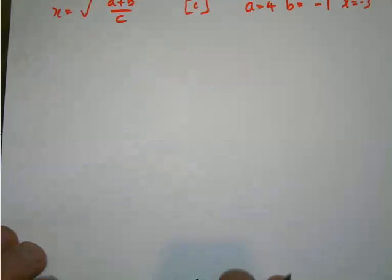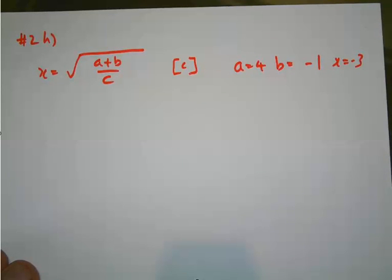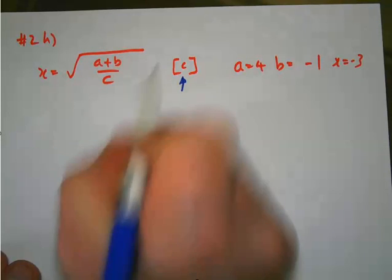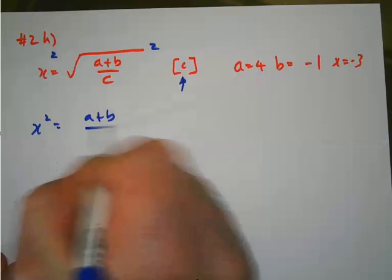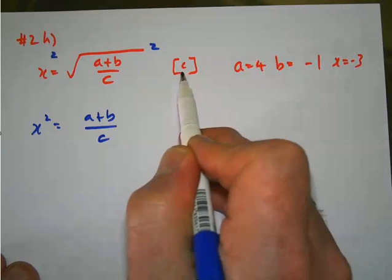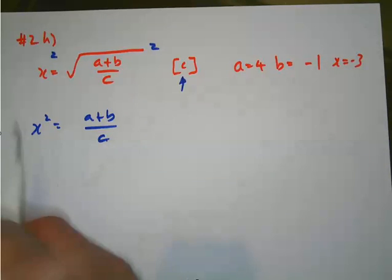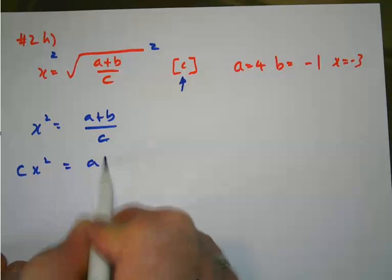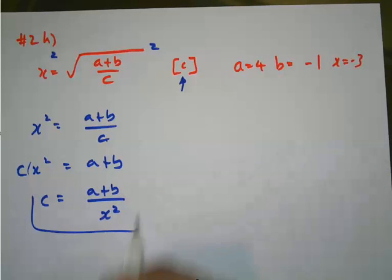And if I also look at 2h, x equals the square root of a plus b all divided by c. Now I need to make c the subject. Since I have all of this square rooted, if I square both sides, that's going to give me x squared equals a plus b all over c. Now it's c that I wish to make the subject. c is in here in the denominator. I'm going to move the c over here and have c times x squared equals a plus b. Then move the x squared and I'll have c equals a plus b all divided by x squared. And that's the rearrangement of the formula in terms of the subject c.